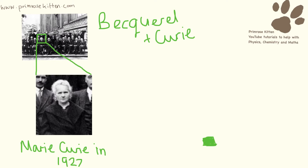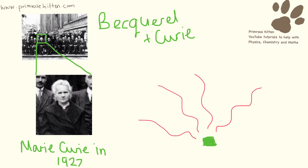Radioactivity was first described by Marie Curie. This is Marie Curie here. This is quite an important conference she was at and she's the only woman at this conference. Marie Curie is a really impressive and revolutionary scientist for her time. She was the only woman working on this and the only woman to have won two Nobel Prizes. Her daughter went on and won Nobel Prizes as well. She and Becquerel were working on some salts and she noticed that these salts were giving off waves of energy, which she described as radioactivity.